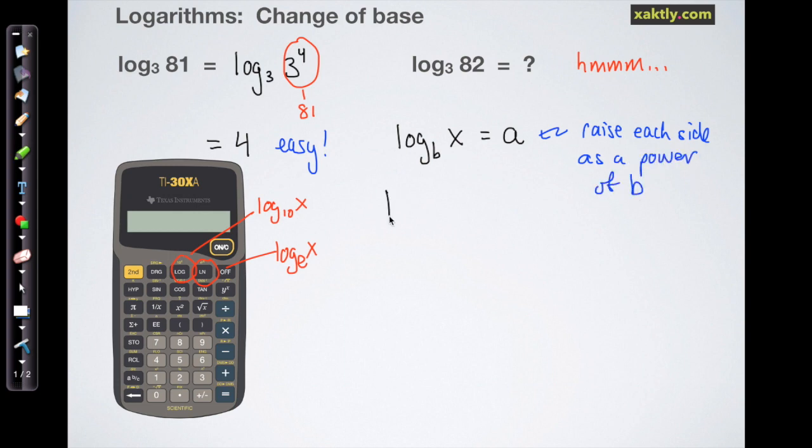So B to the X is the inverse function of log base B, so when I raise both sides to this I'm taking an inverse function of its native function on the left, so I just get X back, so X is equal to B to the A.